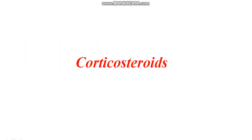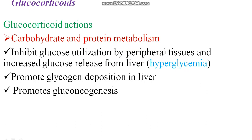Good morning. Today we will look at corticosteroids, which are very commonly used — for COVID, immune system conditions, and as a mainline treatment. Corticosteroids are hormones produced in the cortex of the adrenal gland. The main corticosteroids secreted include glucocorticoids, mineralocorticoids, and a small amount of androgens. Cortisol is the major glucocorticoid and aldosterone is the major mineralocorticoid. Now let's look at the pharmacological part — the major actions and side effects.